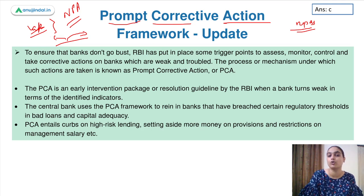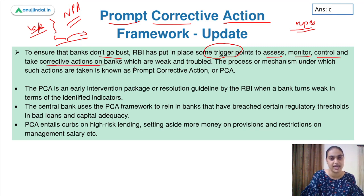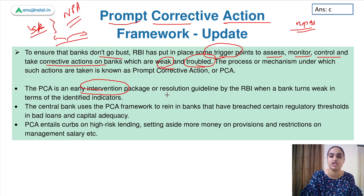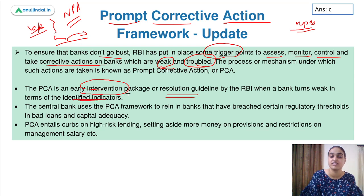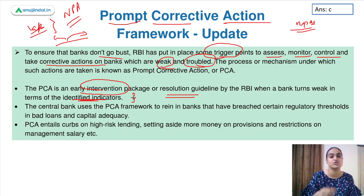To ensure that banks don't go bust, RBI has put in place these trigger points which help assess, monitor, and control bank performance, and take corrective actions when they are weak or in a troubled situation. This is what we call the PCA framework — basically an early intervention package or a resolution guideline by RBI when a bank turns weak in terms of identified indicators. When we see that a bank's position is weak and troubled, we intervene early so that the situation doesn't worsen.